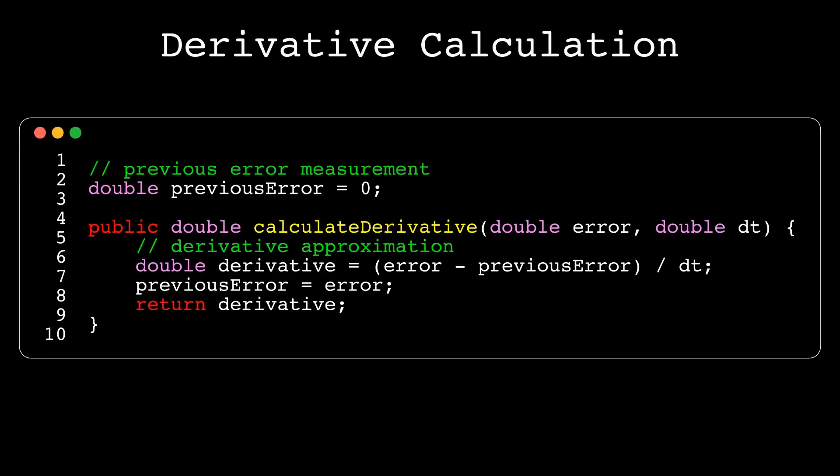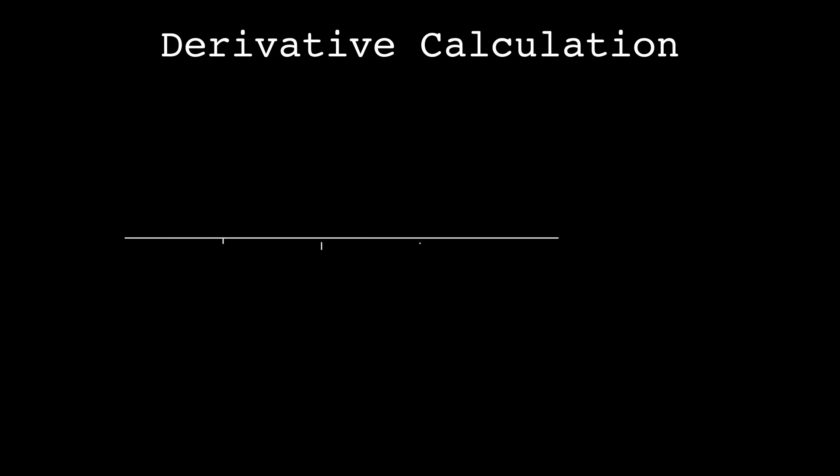Taking the difference between the current measurement and the previous measurement and dividing this difference by the time constant can approximate the derivative of a signal.